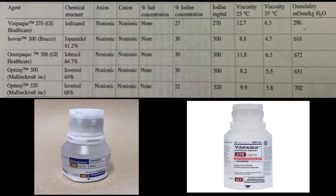These are commonly used non-ionic contrast agents for endovascular neurosurgery. High osmolality contrast media like Omnipack 300 are safe, effective, and less costly, but should be avoided in patients at high risk, such as those with CHF, renal insufficiency, or diabetes. Low osmolality contrast media like Visipaque 270 are relatively more expensive and should be used in high-risk patients.